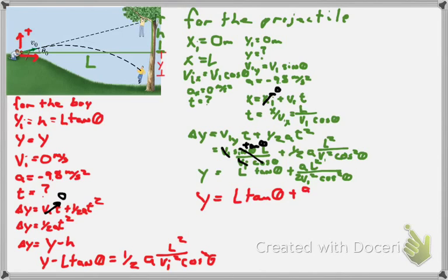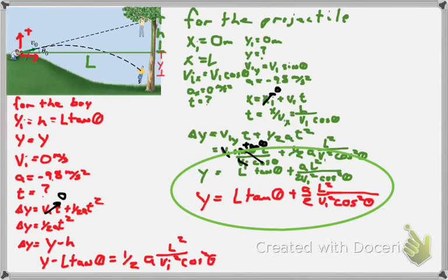No matter where the boy starts or the initial velocity, if the projectile is aimed at the boy, as the boy drops, no matter the velocity and no matter the distance, when the projectile travels distance L, the boy and the projectile will be in the exact same position. This still has a limiting factor that we had before, which is the boy must be far enough off the ground so that when he falls down, he has enough time so that the water balloon can get there.